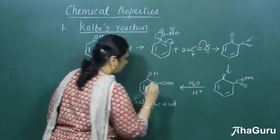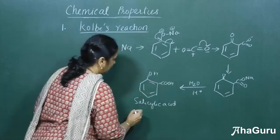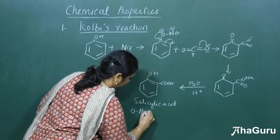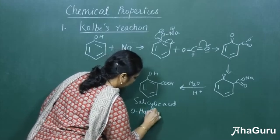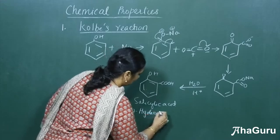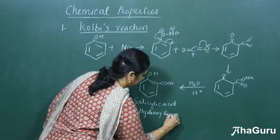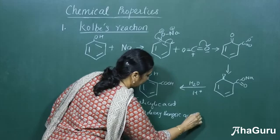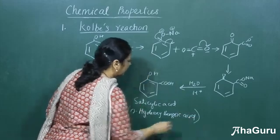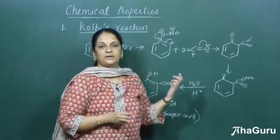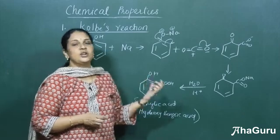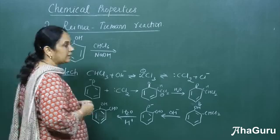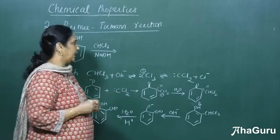This product is called salicylic acid. The trivial name is orthohydroxybenzoic acid and the IUPAC name is 2-hydroxybenzoic acid. Salicylic acid is a very important compound because it is used for the preparation of aspirin.